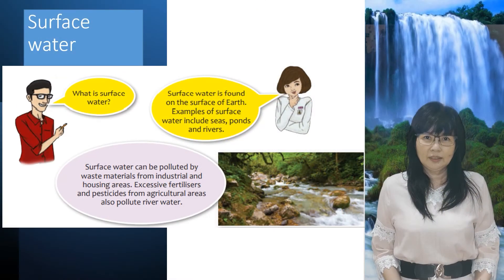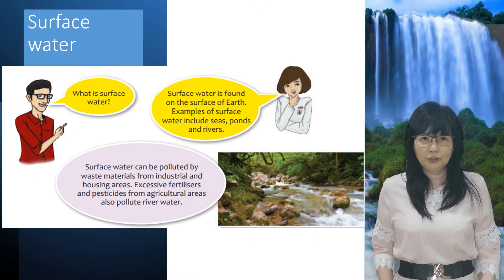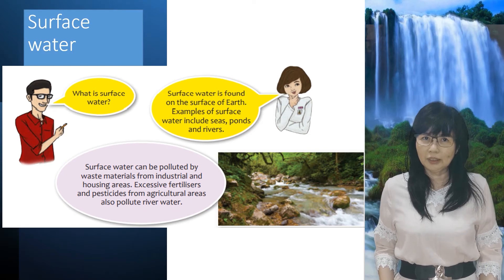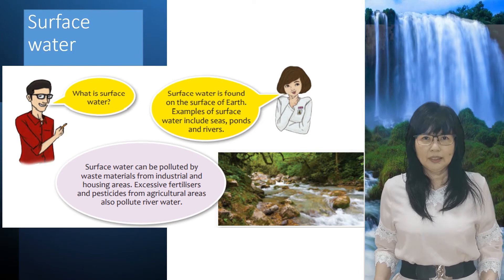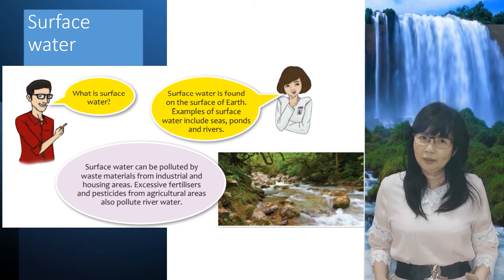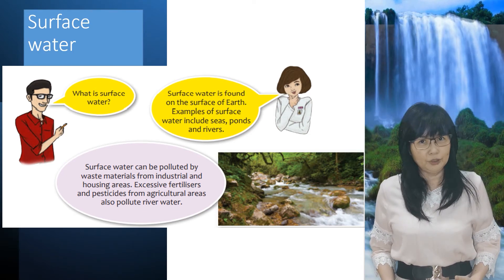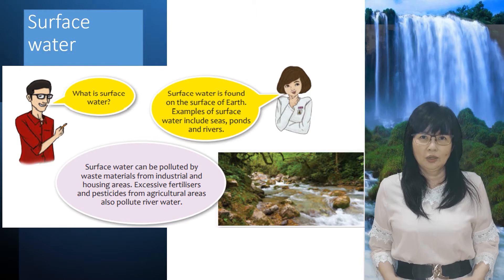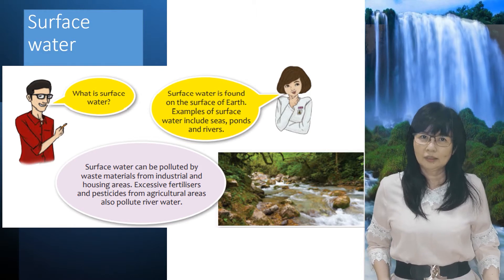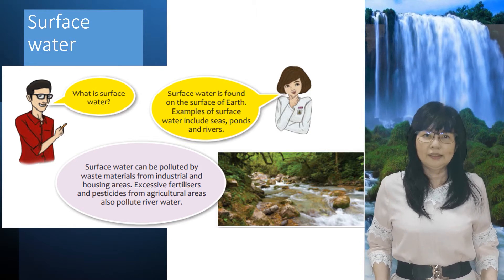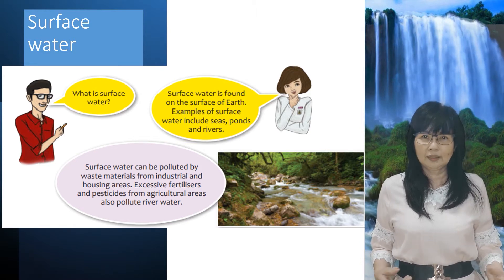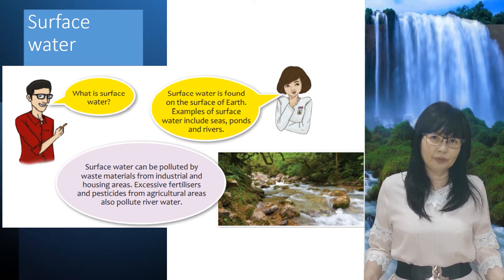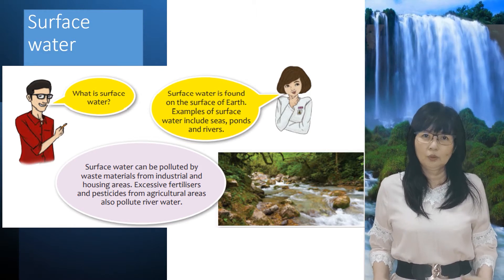What is surface water? Surface water is found on the surface of Earth. Examples of surface water include seas, ponds and rivers.